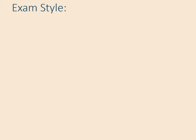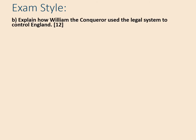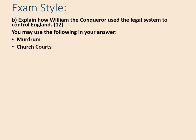We're now going to put this to use in an exam-style question: 'Explain how William the Conqueror used the legal system to control England.' You may use the murdering fine and church courts in your answer, but you must also use information of your own. This is a 12-mark question — six marks for knowledge and six for explanation and analysis. It is sensible to include both suggested examples, but you can still get top marks even without them if you include enough of your own knowledge.